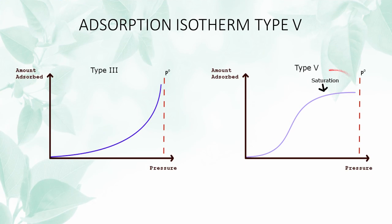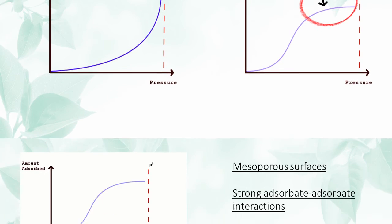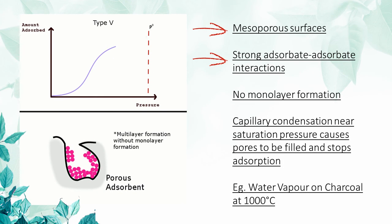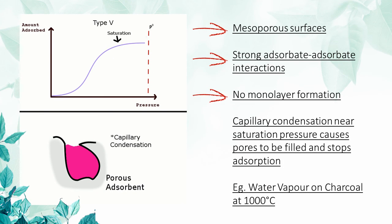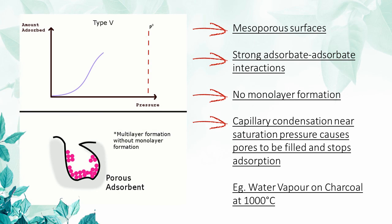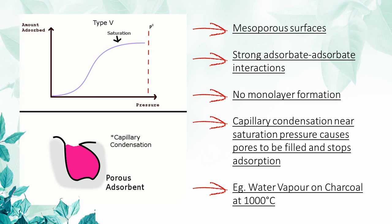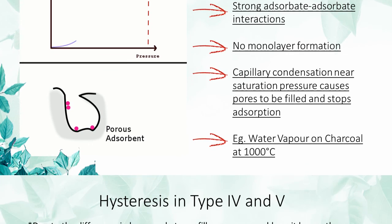A similar case is also observed between type 5 and type 3 isotherms, where multilayer adsorption occurs on the surface of the pores without the formation of a monolayer, until capillary condensation causes the pores to fill up and stops the adsorption, such as in the adsorption of water vapor on charcoal at 100 degrees Celsius.